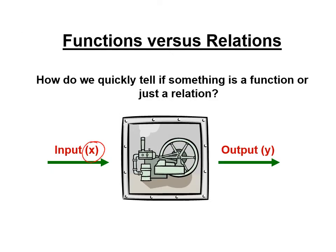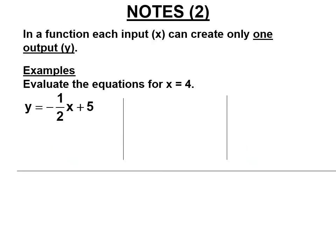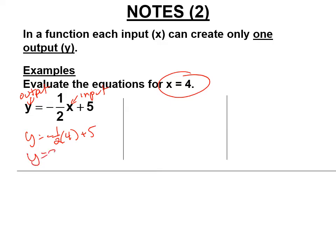X is always the input and y is always the output in a function. For example, y = -1/2x + 5, evaluate at x = 4: y = -1/2 times 4 plus 5. Negative one-half times 4 is negative 2, and negative 2 plus 5 is 3. So the output is 3.